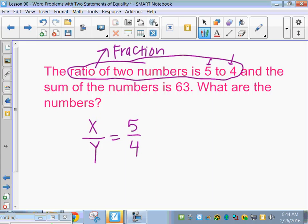And the sum of the two numbers is 63. That's the second equation. So Dylan, how can I write the sum of the numbers is 63? The sum of the two numbers, x and y, equals 63.